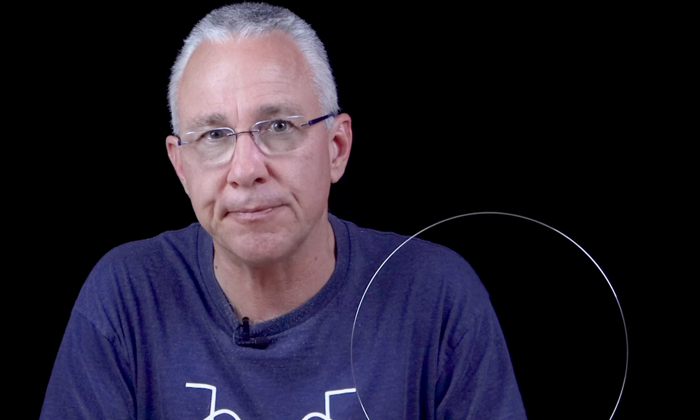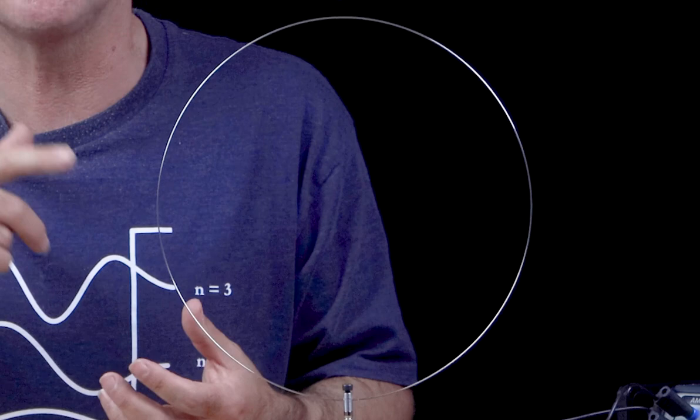According to James Clerk Maxwell, accelerating electrons should emit electromagnetic radiation. Now since Rutherford's electrons are undergoing circular motion, they're actually accelerating and thus should be losing energy. But that would mean a spiral of death. They would spiral into the nucleus and that clearly doesn't happen. And that bothered Niels Bohr and he came up with a solution.